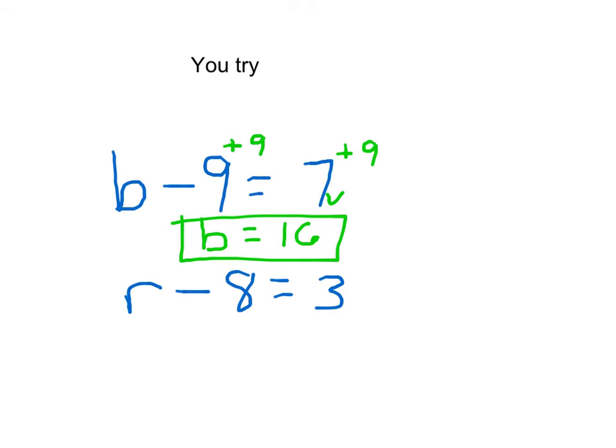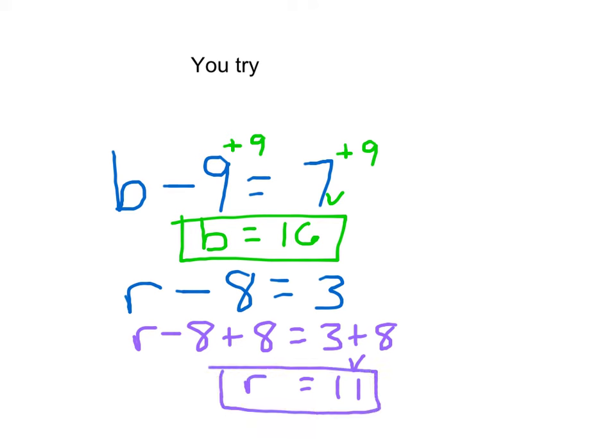For that second problem, again, we're trying to get that variable, the only thing on that side. So we will add 8 to both sides of that equation. 3 plus 8 is 11. R minus 8 plus 8 just leaves us with R. So R equals 11.